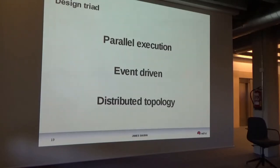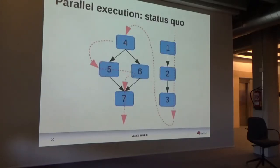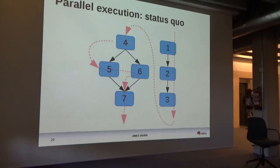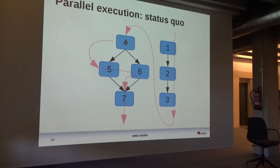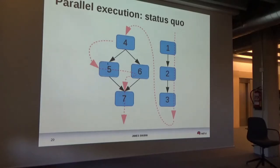I'll show you these three things one at a time. Here's a graph. These blue boxes represent resources — the little units of work you might want to do, like creating a file, starting or stopping a service, or doing some other fun thing. The black arrows represent the dependencies, so you want one to happen before two, two before three, five before seven, and so on.